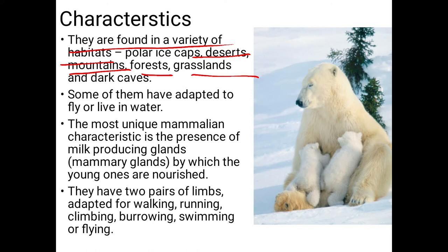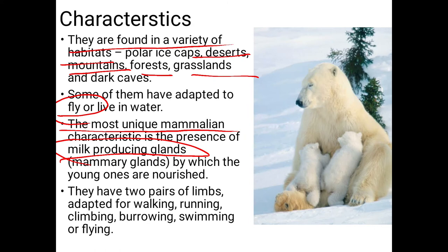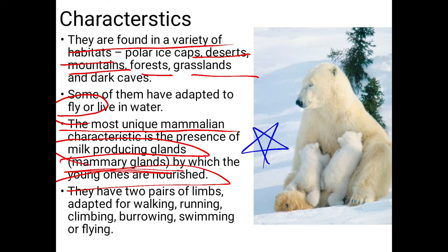Some mammals have adapted to fly or live in water. The most unique mammalian characteristic is the presence of milk-producing glands — mammary glands — through which young ones get nourishment. The presence of mammary glands is a very important point.